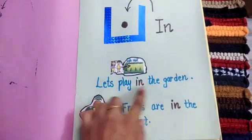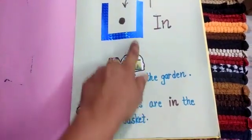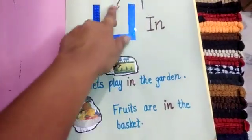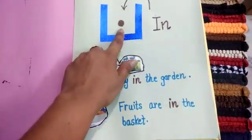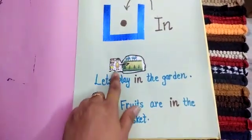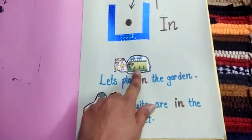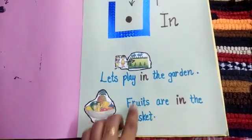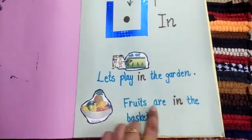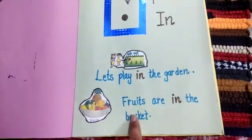Let's play in the garden — it shows the position 'in'. They are going to play in the garden. Fruits are in the basket.